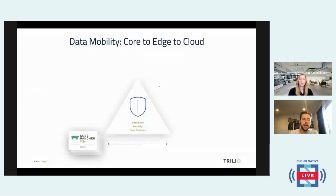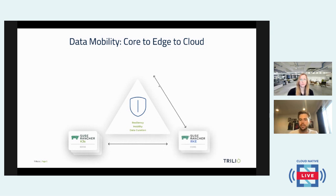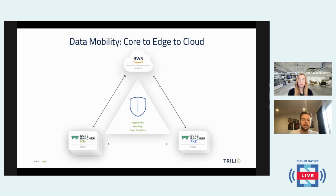When looking at core-to-edge in terms of Kubernetes, there's a variety of edge computing options. One example would be Rancher K3S, which is the edge cluster we're going to use in a demo today. Then we have the Rancher RKE, a core cluster — for our demo we'll actually be using EKS. And then the connection to AWS, to the cloud itself. This outlines the architecture of connecting and migrating data from K3S to core and connecting it through the cloud itself.